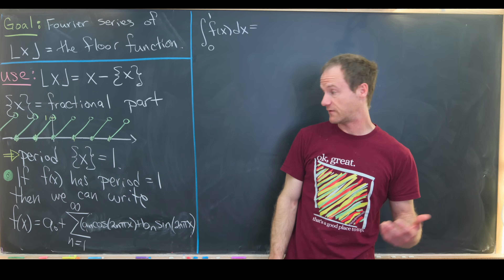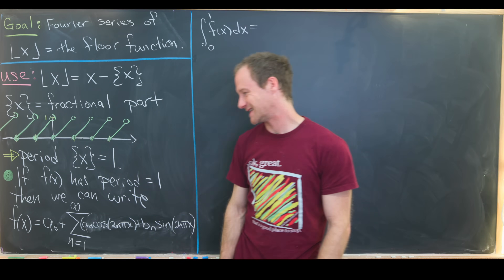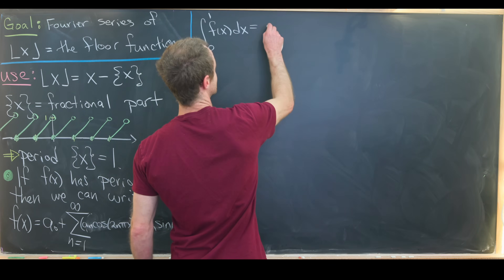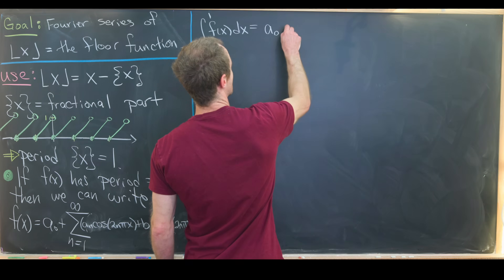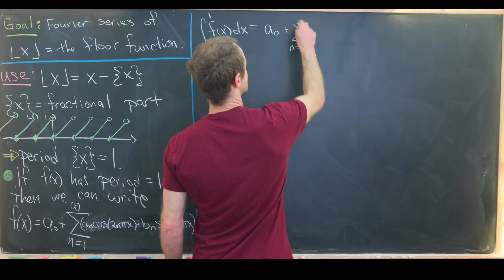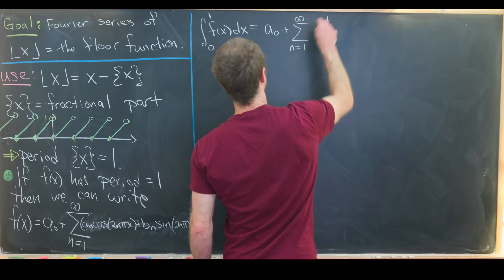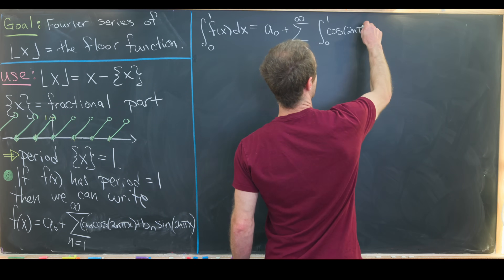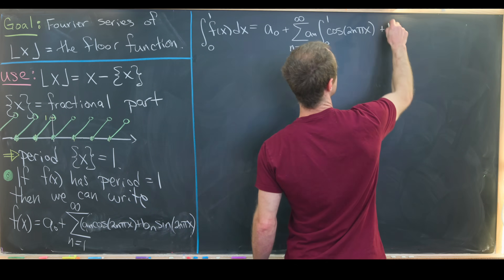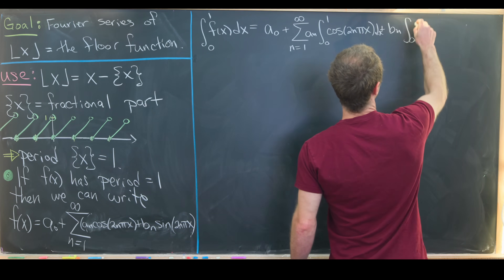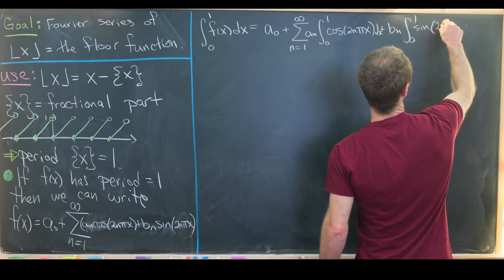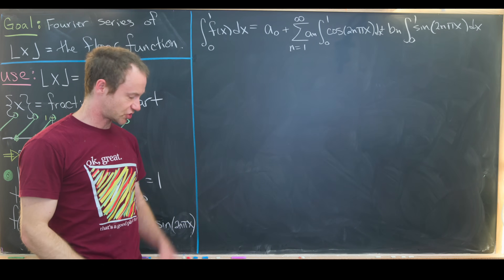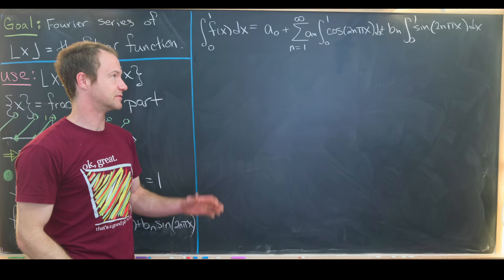We can integrate f(x) directly, and we can also integrate the series term by term. Integrating the constant a₀ just gives us a₀. Then we have the sum as n goes from one to infinity, with aₙ times the integral from zero to one of cosine(2nπx) dx, plus bₙ times the integral from zero to one of sine(2nπx) dx. We interchange summation and integration, which is valid here.